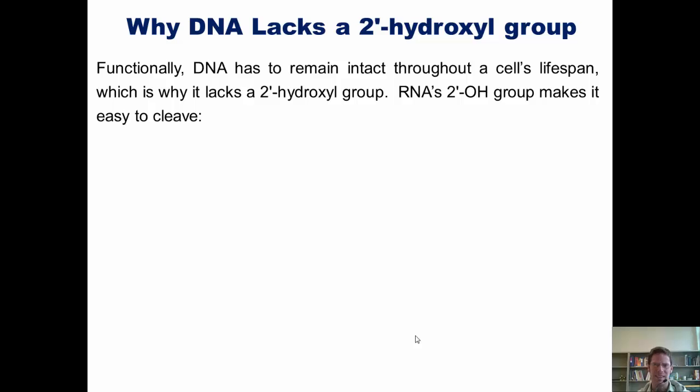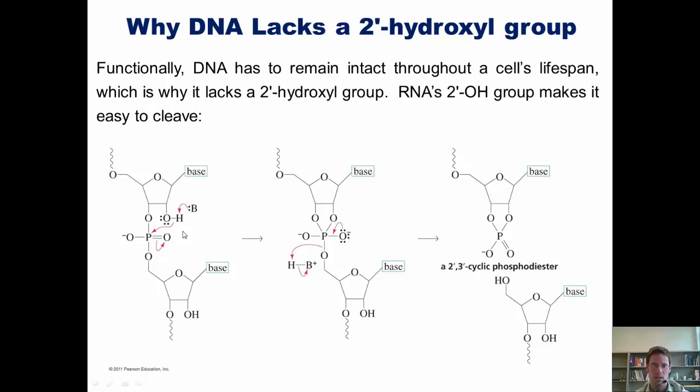So why does DNA really lack a two prime hydroxyl group? Well, as it turns out, having a two prime hydroxyl group makes a nucleic acid relatively unstable. Here's how. As we can see, in RNA we have a two prime hydroxyl group in the sugar phosphate backbone. Because of that, if that RNA is exposed to base, even mild base, this kind of rearrangement can occur.